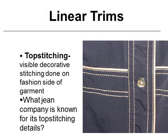Top stitching is very commonly used. It is visible stitching on the fashion side of a garment to add visual interest or emphasize the seam lines. This example has piping and several rows of top stitching. A couple of jean companies are very well known for their top stitching details.